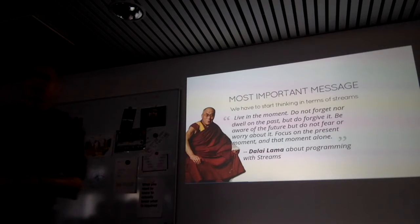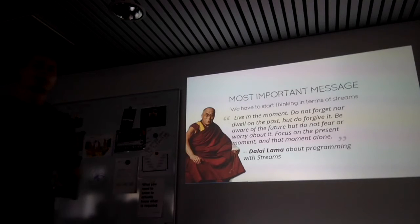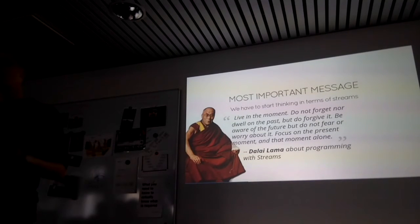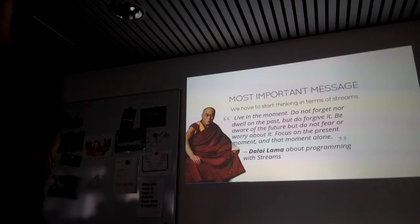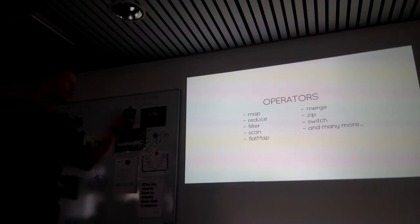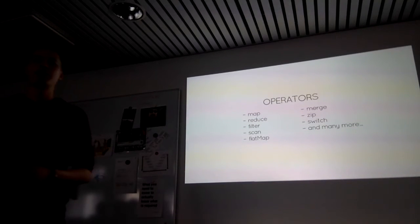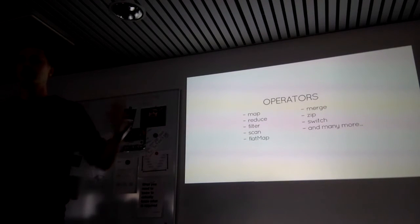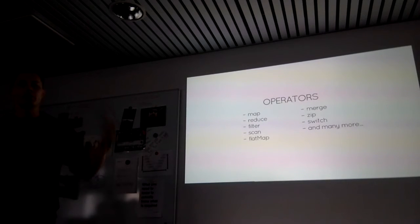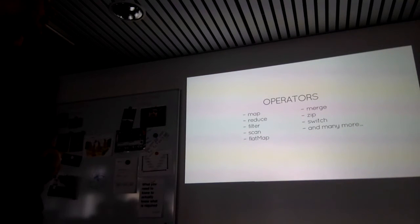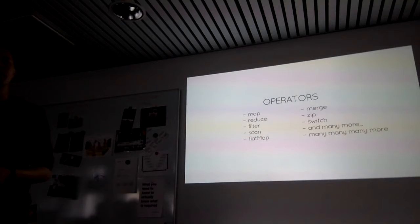When working with observables we can also transform them with functional programming — similar to how you use map, reduce, and filter on collections. Observables have many of the same operators: map, reduce, filter, merge, and many more that can be used to transform a stream into a new stream. Observables are immutable, so you always get a new stream back from calling these operators. There are quite a lot of them — many more than can fit on one slide.